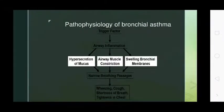Pathophysiology of bronchial asthma: hypersecretion of mucus, airway muscle contraction, and swelling of bronchial membranes are key mechanisms. Trigger factors lead to airway inflammation, narrowing of the breathing passage, resulting in wheezing, cough, shortness of breath, and tightness of chest.